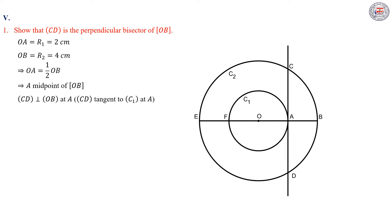And also we have CD perpendicular to OB at A, since CD is the tangent to circle C1 at the point A. So we have a perpendicular CD passing through the midpoint of OB, which is A. Therefore, CD is the perpendicular bisector of OB.